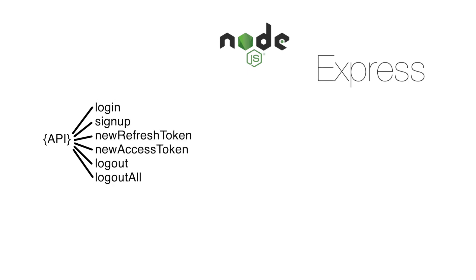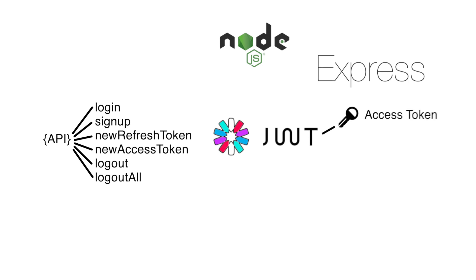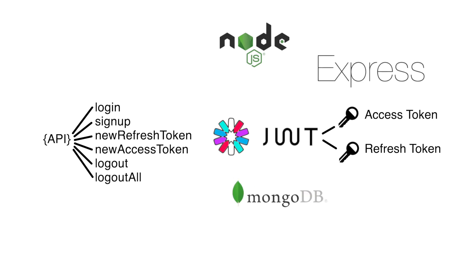We'll work on six endpoints. We will implement token-based authentication using JSON Web Tokens, for that we'll use access and refresh tokens, and we'll go over how a client will use these. Our API will be backed by a MongoDB database, and we will use the Mongoose library to interact with it.